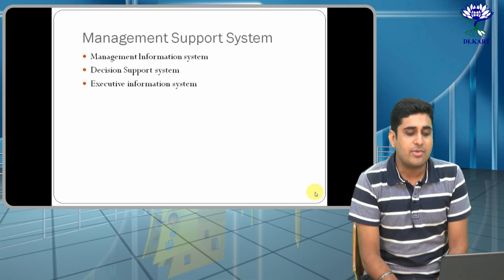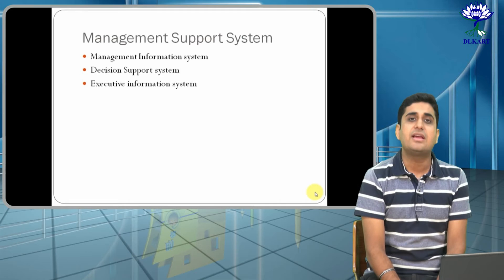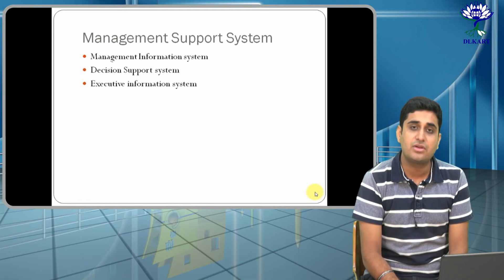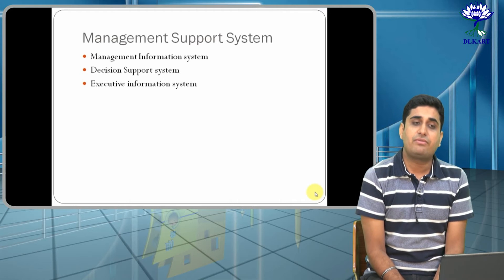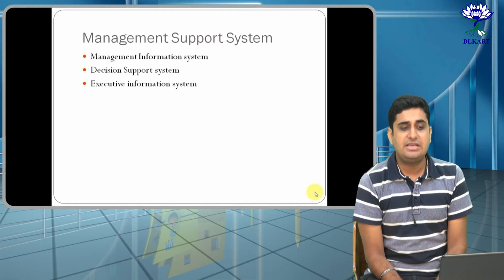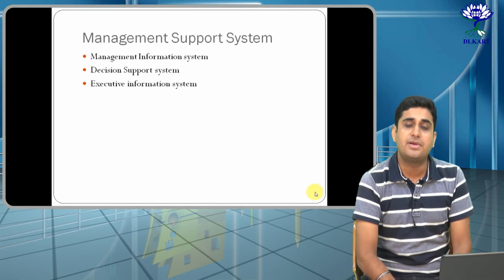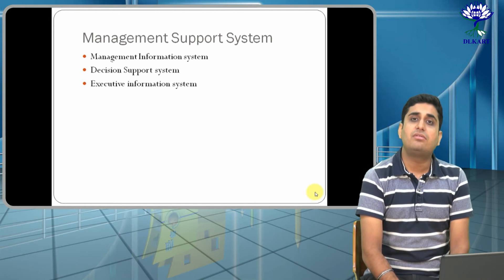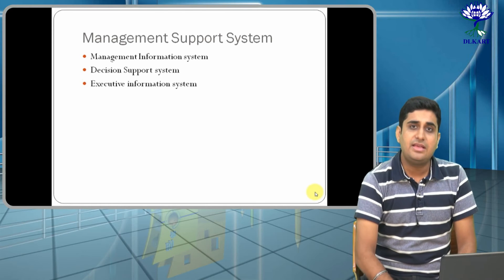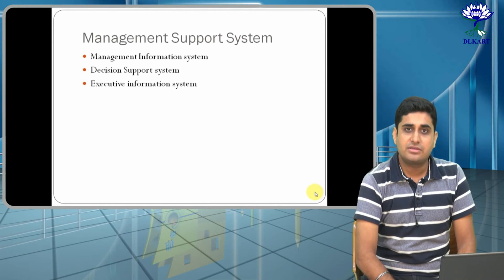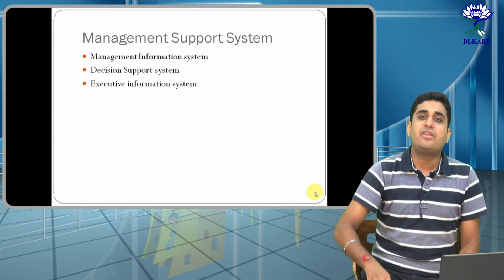Management Support System deals with three subcategories: MIS — Management Information System, DSS — Decision Support System, and EIS — Executive Information System. These three are very important strategic categories on which the complete management of the company depends.